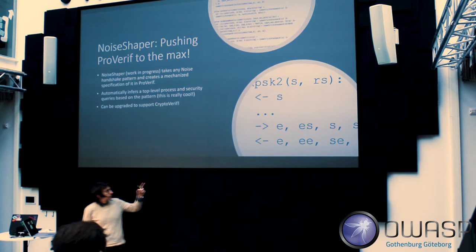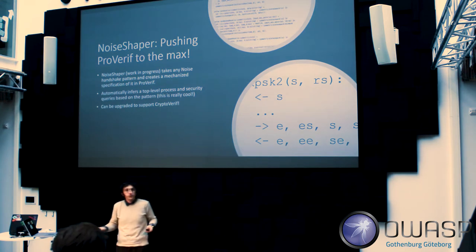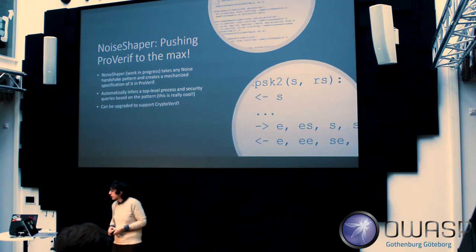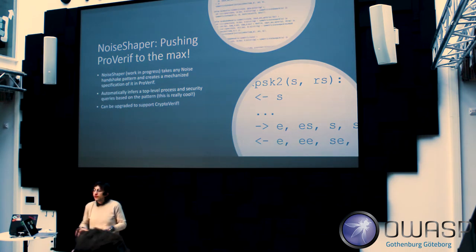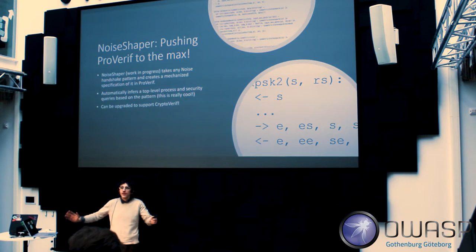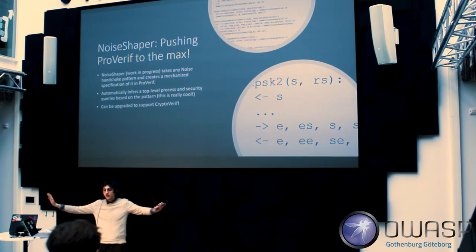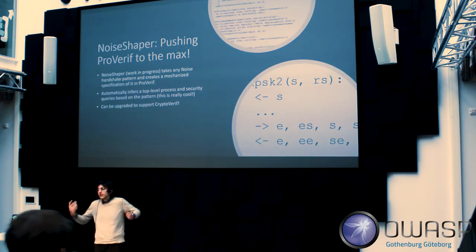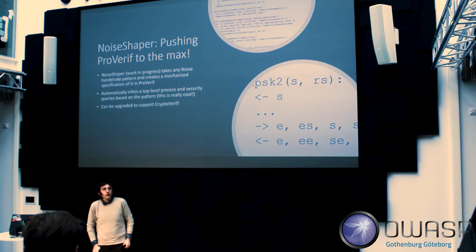The Noise language for describing handshake patterns is tiny, yet can describe everything from WireGuard VPN to something similar to TLS or Signal. Because there are only a relatively small subset of possible protocols, you could have a powerful server verify every single possible Noise protocol, cache all the verification results, and build an encyclopedia: you input your Noise protocol and immediately get full verification results against all kinds of queries. If not cached, you wait a few minutes or hours, then it's cached forever.